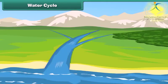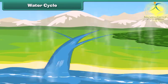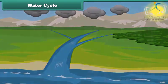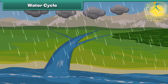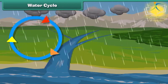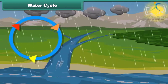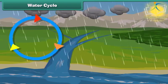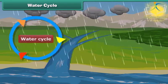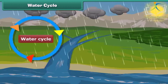Finally, the water reaches the water bodies and gets collected there. You can see water is constantly cycling from land to air and back to land again. This process is known as the water cycle. Therefore, kids, water on our earth will never come to an end.